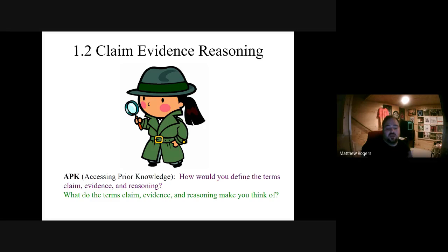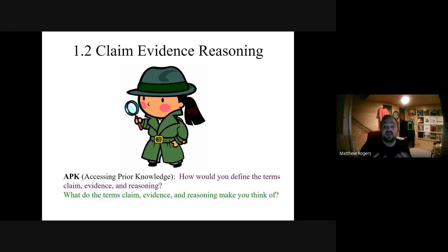Claim, evidence, and reasoning is a structure to understand scientific problems. It's the way that scientists view the world. For someone like me, this is how I assess and problem solve in my own brain. It's one of many different ways to problem solve.